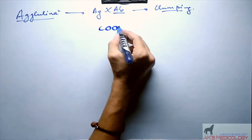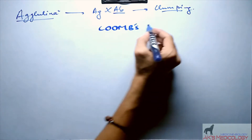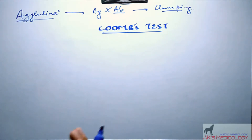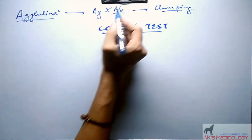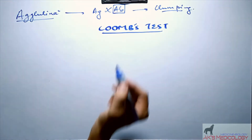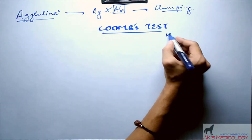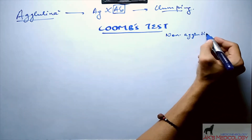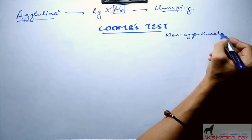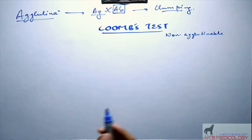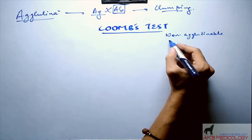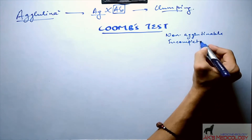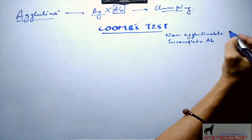The basis of performing Coombs test is to identify or determine antibodies inside the body of an individual which are non-agglutinable or which do not agglutinate the antigens. Such antibodies are also called incomplete antibodies or non-agglutinable antibodies.